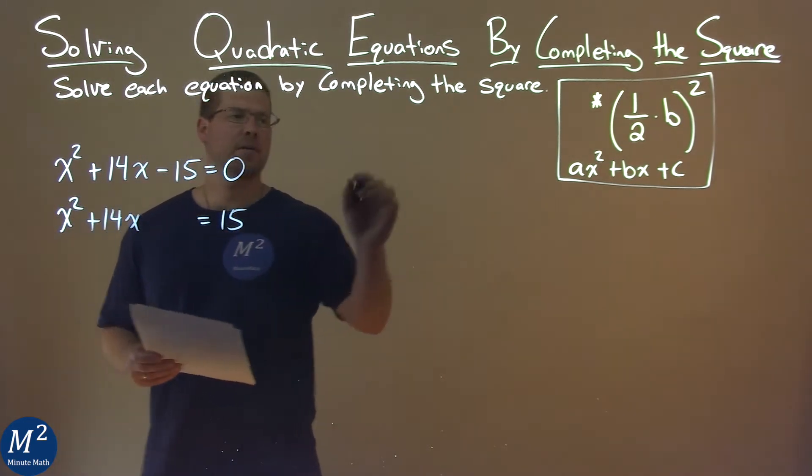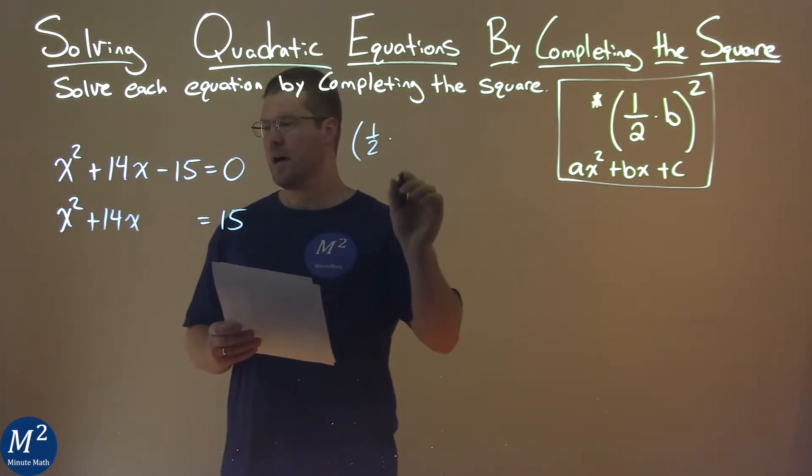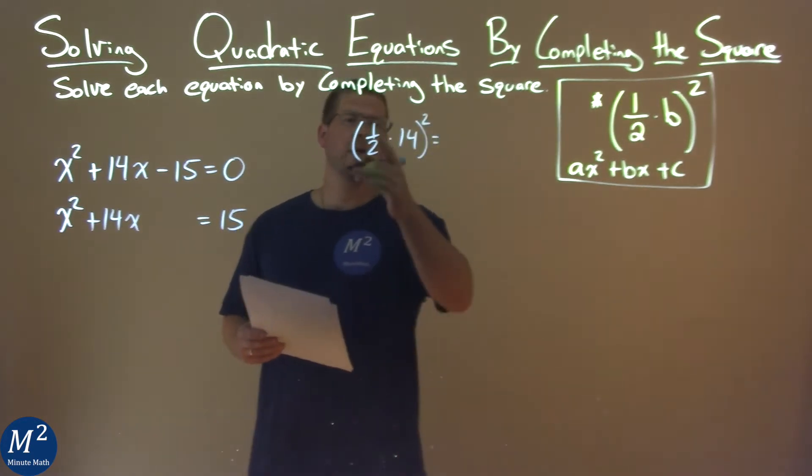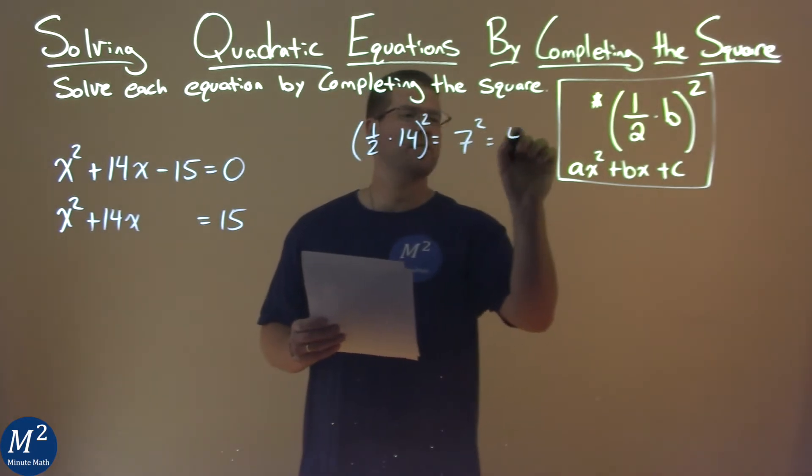Now, let's look at our b value. We use our formula, 1 half times 14 all squared. Well, 1 half times 14 is 7 squared, and that's 49.